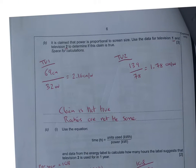Another numeracy question now. The question is saying that it's proportional to screen size. So we're going to take the screen size and power rating of TV1, and see how many centimeters per watt we're getting. We're getting 2.16, and then we're going to do the same with TV2.